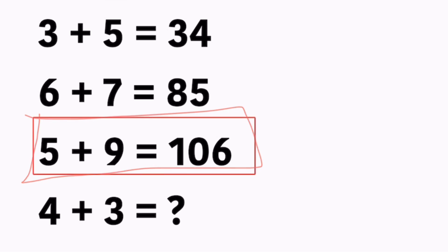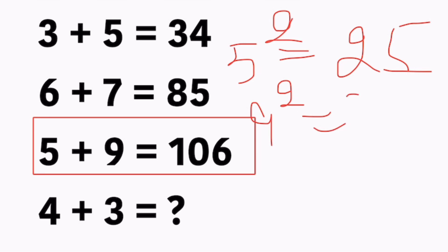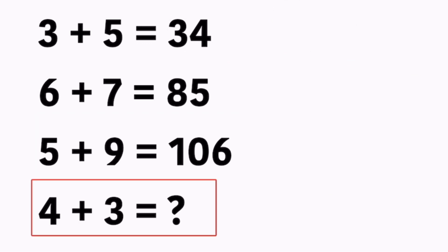Look at the next statement: 5 plus 9 equals 106. Take the first number, 5: 5 squared equals 25. Take the second number, 9: 9 squared equals 81. Last step: add both numbers — 25 plus 81 equals 106. And 106 appears on your screen. Now apply the same formula to the last statement to find the question mark's value.